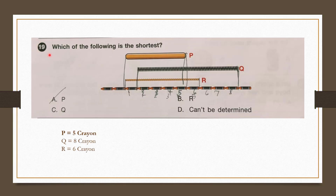Question number 19: Which of the following is the shortest? Let's count the length of P: 1, 2, 3, 4, 5 units. Now count Q: 1, 2, 3, 4, 5, 6, 7, 8 units. Find the length of R: 1, 2, 3, 4, 5, 6 units. P is the shortest. So our answer is option A, P.